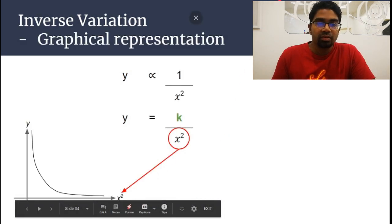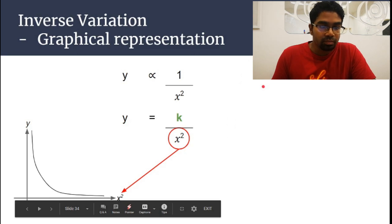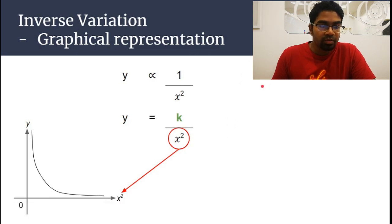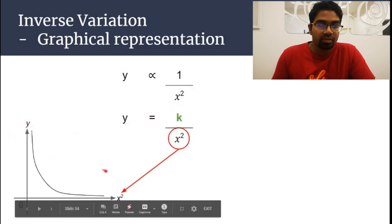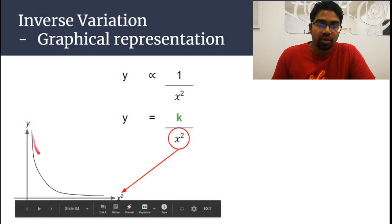For the graphical representation when y varies inversely as x to the power of n, we plot a graph of y against x to the power of n — for example, y against x squared. You will get the reciprocal graph shape. You cannot plot y against x and expect to get this reciprocal graph.